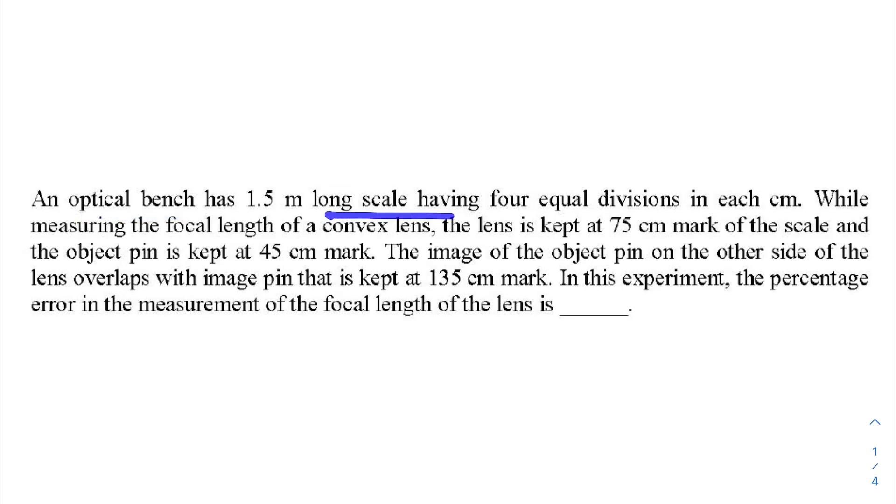An optical bench has 1.5 meter long scale having four equal divisions in each centimeter. This will give us the least count. While measuring the focal length of a convex lens, the lens is kept at 75 centimeter mark of the scale. The object pin is kept at 45 centimeter mark.